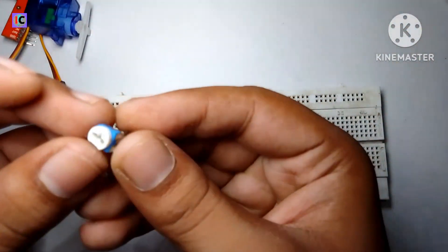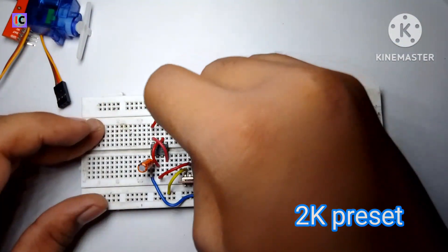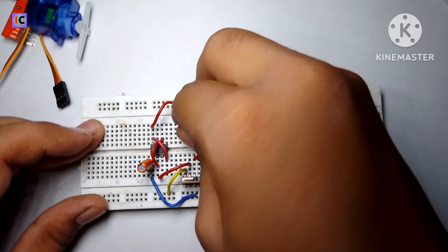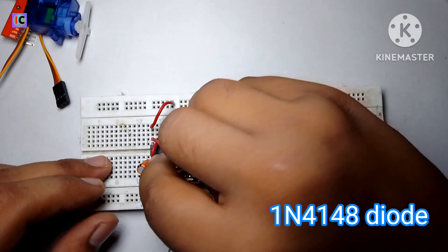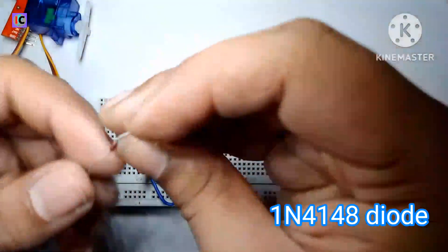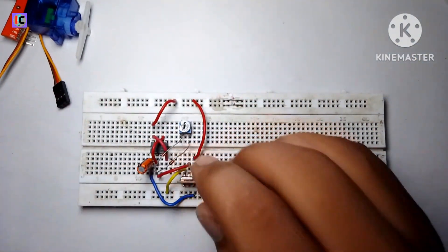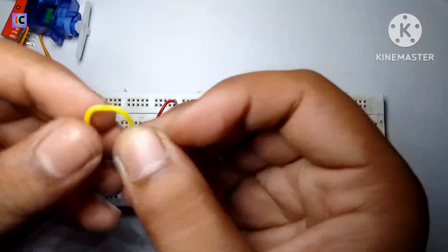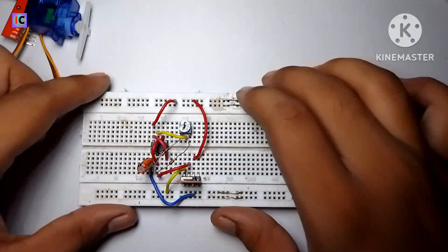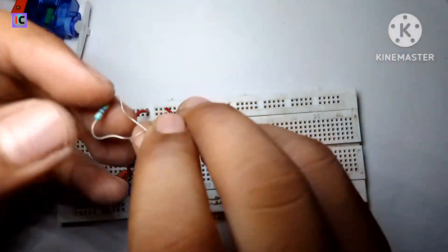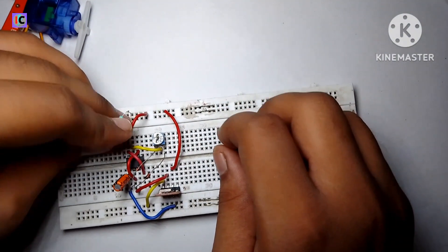There's a 2k potentiometer for varying the duty cycle, and this is the 1N4148 diode. This diode is used to adjust the duty cycle. The center pin of the potentiometer is connected to pin number seven.